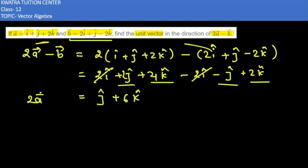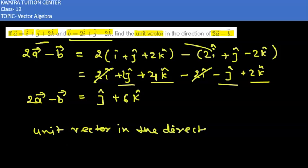So we have our required value of 2a minus b, which is j hat plus 6k hat. Now we need to find the unit vector in the direction of 2a minus b vector.